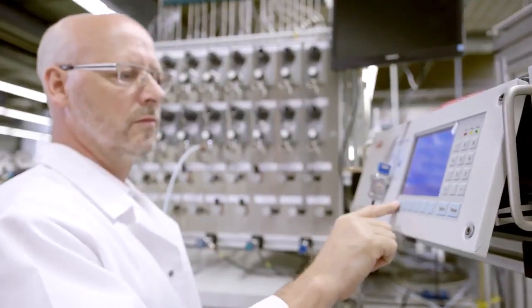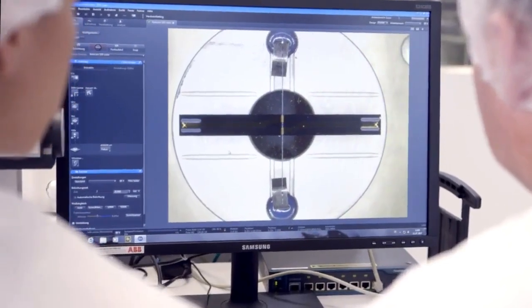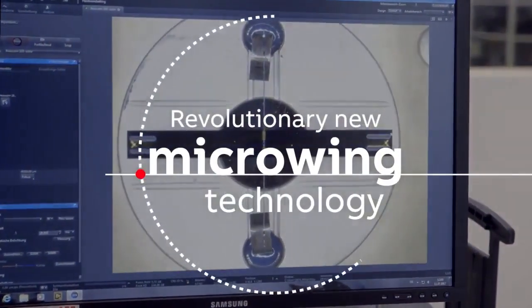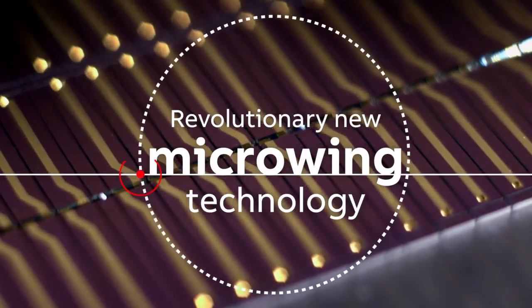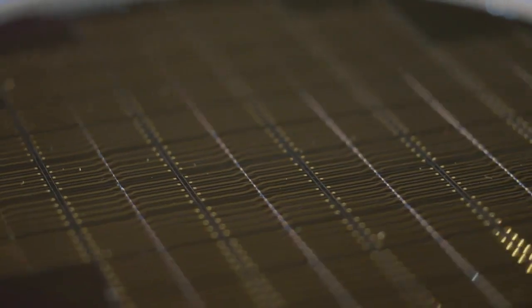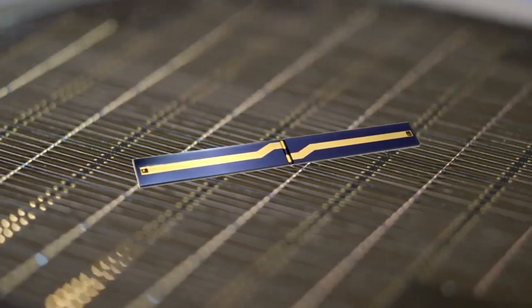ABB is rethinking paramagnetic oxygen measurement with revolutionary new micro-wing technology. Its patent-pending silicon sensor integrates all the functionality of the glass dumbbell in one piece.